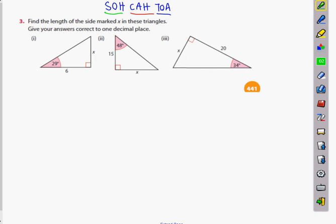So I make a list. This is the adjacent and this one here is the opposite. And then I'll figure out which one I'm going to use. Which one am I going to use? TOA or tan. Okay, so tan 29 equals x over 6. That's opposite divided by adjacent.